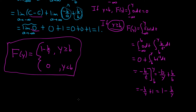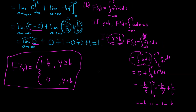So big F of y is the piecewise function: 1 minus b over y for y greater than or equal to b, and zero for y less than b. That's the cumulative distribution function. Many sources skip the step of breaking the integral at b, but it's important to recognize it's there.